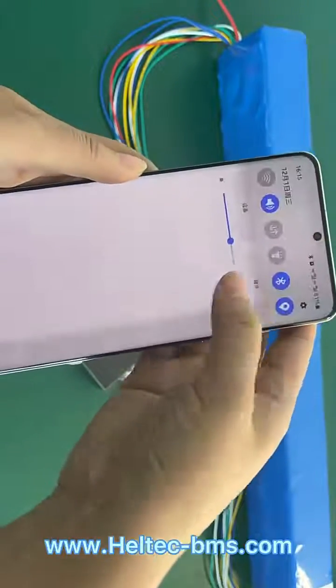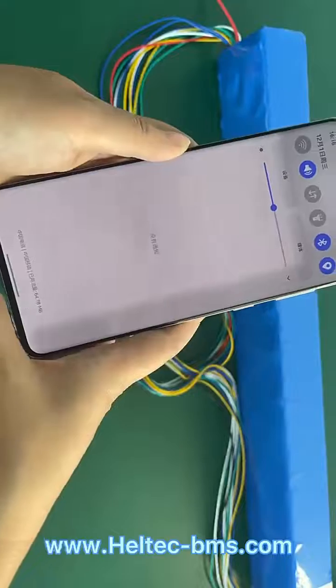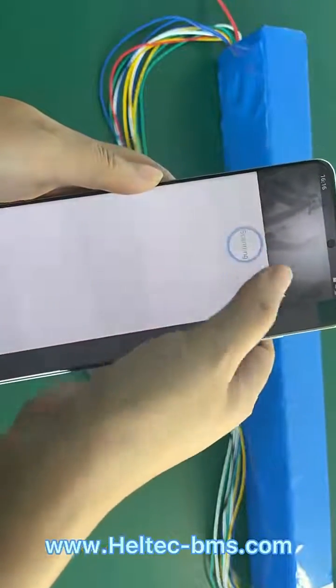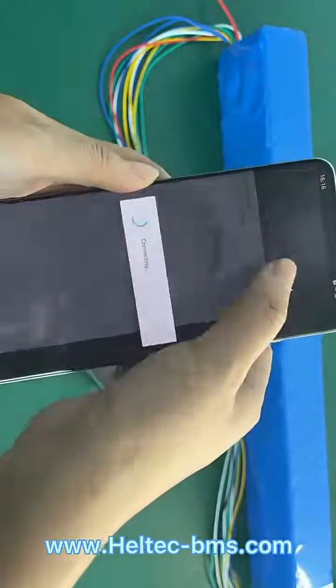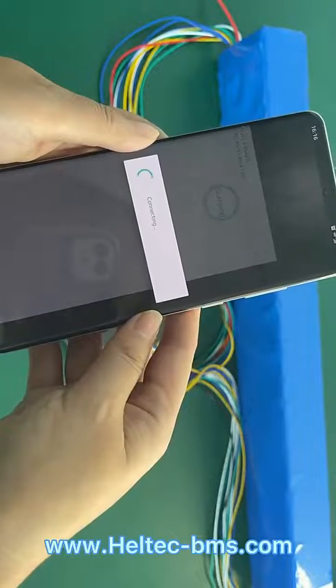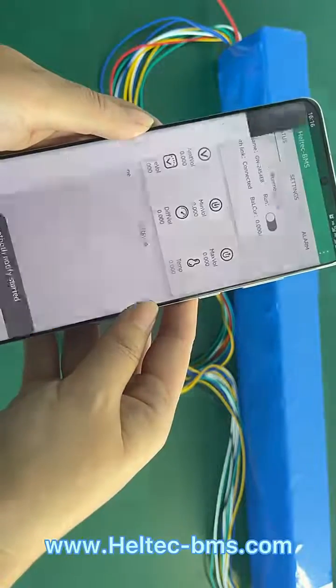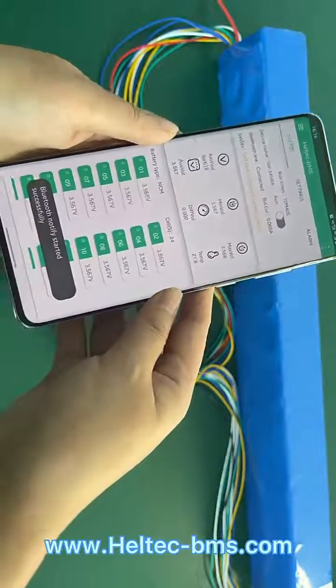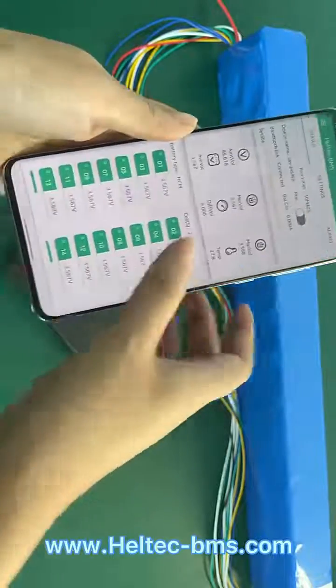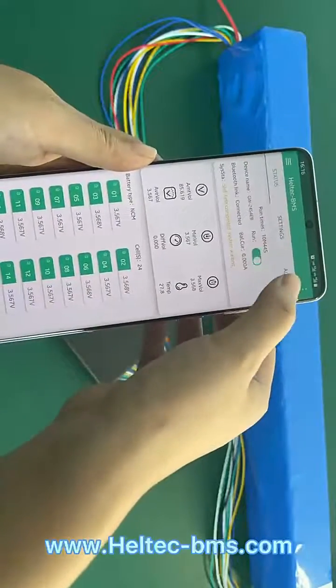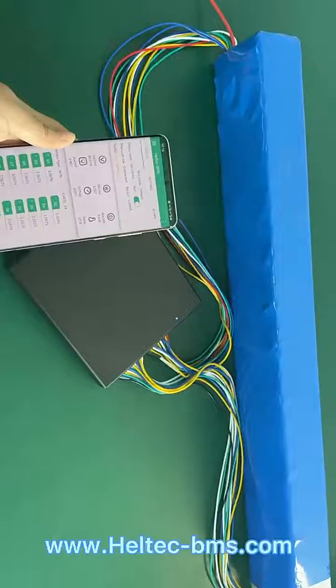You need to open your Bluetooth tool and scan to find the device. When everything is done, you can run the balancer.